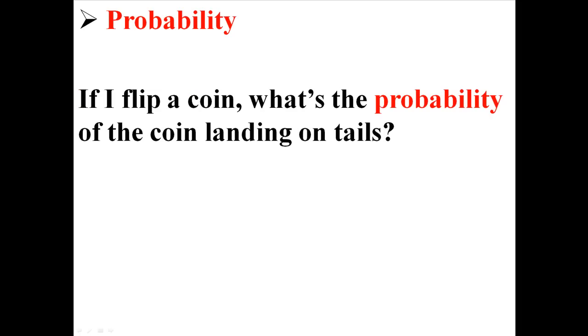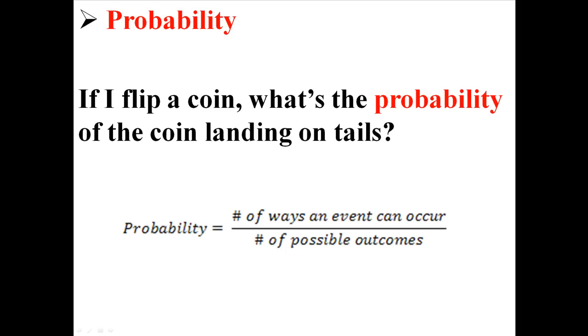Like, for example, if I flip a coin, what's the probability of the coin landing on tails? Well, there's a way we can write this. Probability is the number of ways an event can occur divided by the number of possible outcomes.